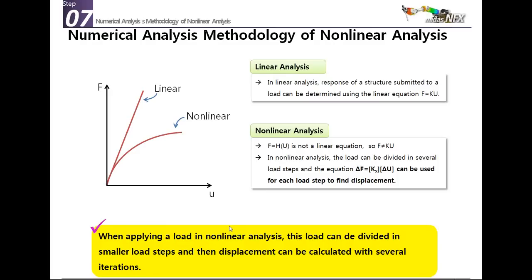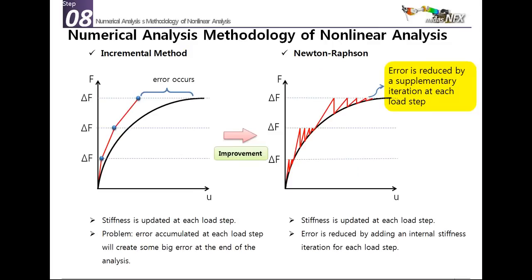Nonlinear analysis needs several iterations. The basic incremental method divides the total force into smaller delta-F increments and approximates the curve at each step. The problem with this simple approach is that a small error is introduced at each step and accumulates, producing a big error at the end. This is the main problem of the simple incremental method, which is why there have been many improvements.